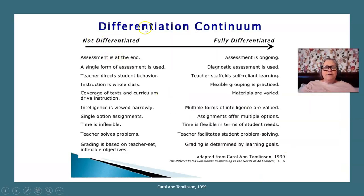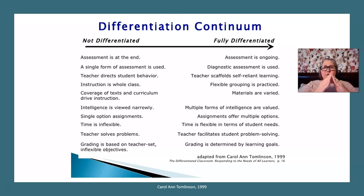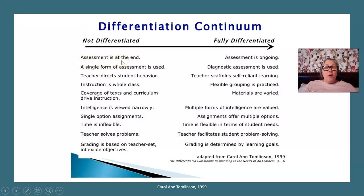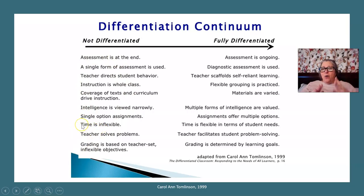So there is a continuum of differentiation. No one's completely fully differentiated — when you talk about a perfect classroom, you don't really have one. Everybody is on this continuum somewhere. At the not-differentiated end, you have only summative assessments at the end, no formative or informal assessments, only one kind of assessment, teacher always directing what students do, instruction is always whole class, teachers talk about covering material, and intelligence is viewed as just one way — very teacher-centered, whole-group-centered.